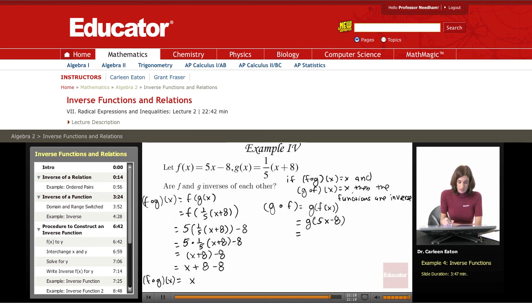I need to evaluate g for this expression when x is 5x - 8. That's (1/5) of (5x - 8), and then add 8 to that. So here I have (1/5). Let's get rid of some of these parentheses inside to simplify: 5x - 8 + 8.